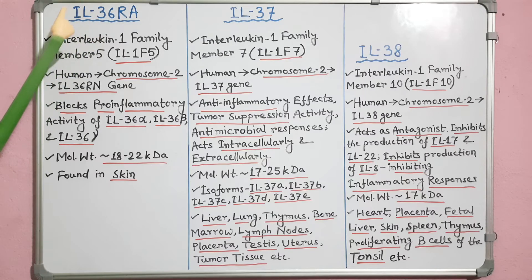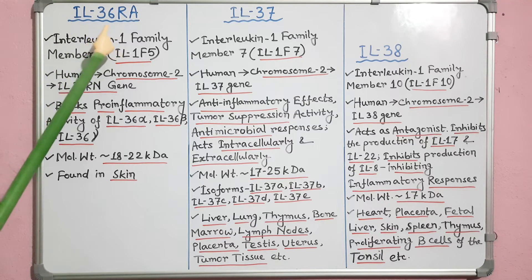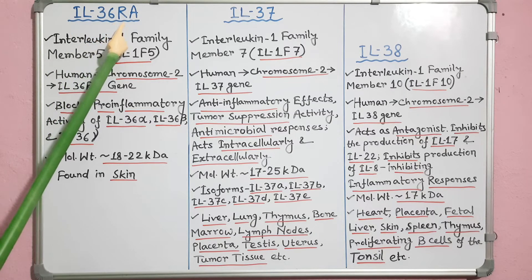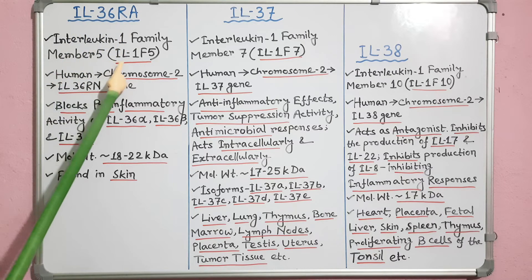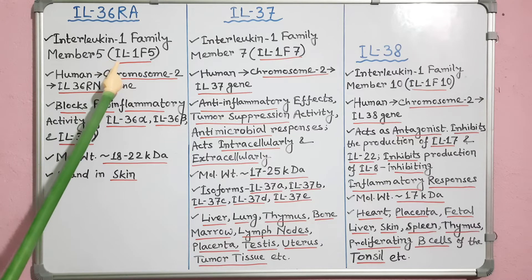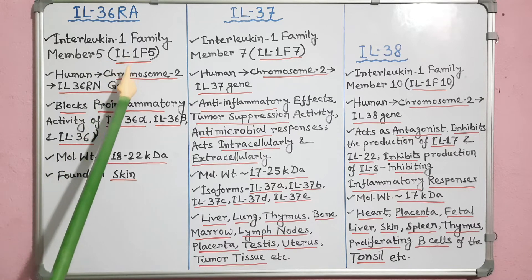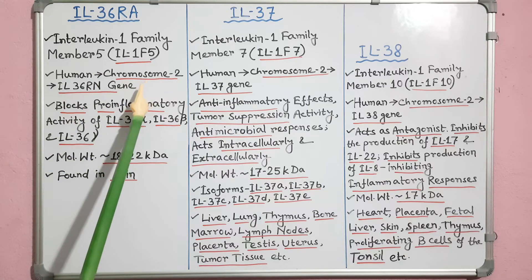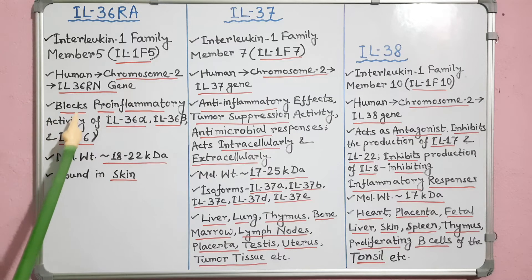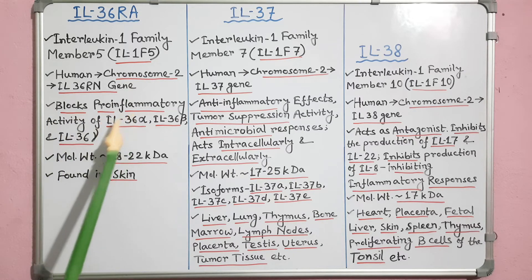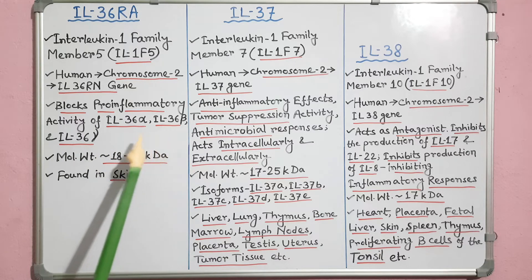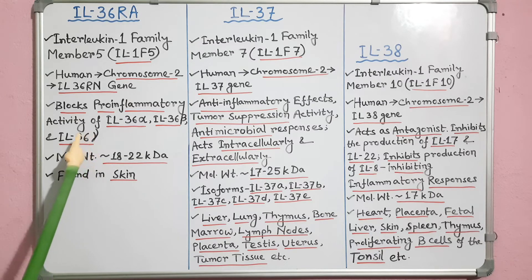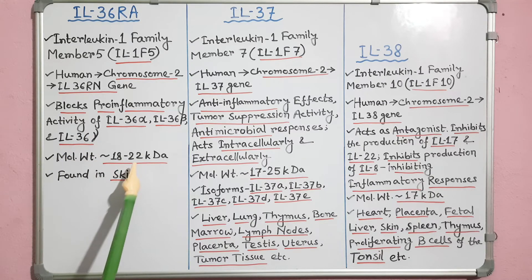Interleukin-36 receptor antagonist or IL-36RA was previously named interleukin-1 family member 5 or IL-1F5. It is encoded by the IL-36RN gene of chromosome 2 in humans. It regulates inflammation by blocking the pro-inflammatory activity of IL-36 alpha, IL-36 beta and IL-36 gamma. Molecular weight is 18 to 22 kilodalton, and this protein is primarily found in the skin.